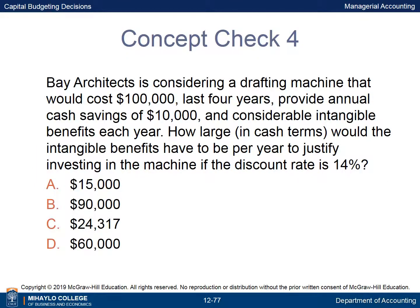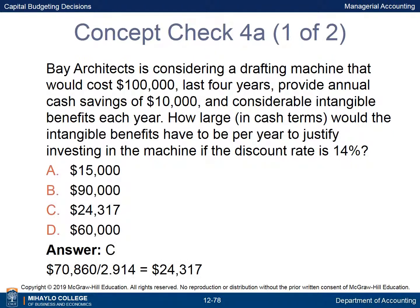Bay Architects is considering a drafting machine costing $100,000 with a four-year life, providing annual cash savings of $10,000, plus considerable intangible benefits. How large would the intangible benefits need to be to justify the investment at a 14% discount rate? The NPV of the investment is negative $70,860; dividing that by the present value factor of 2.914 indicates that annual intangible benefits must be at least $24,317 to justify the investment.